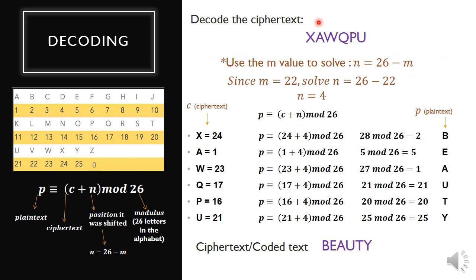Now let's proceed to decoding the message. Let's decode the same text. In decoding, we're going to use this formula: the plain text congruent to the ciphertext plus the position, where N equals 26 minus M, mod 26. Since in the last slide we used 22, we subtract that from 26 because there are 26 letters. So N equals 26 minus 22, which is 4. Now let us write the ciphertext here: XAWQPU, and look for the equivalent in the alphabet numerical. X is 24, A is 1, W is 23, Q is 17, P is 16, U is 21.